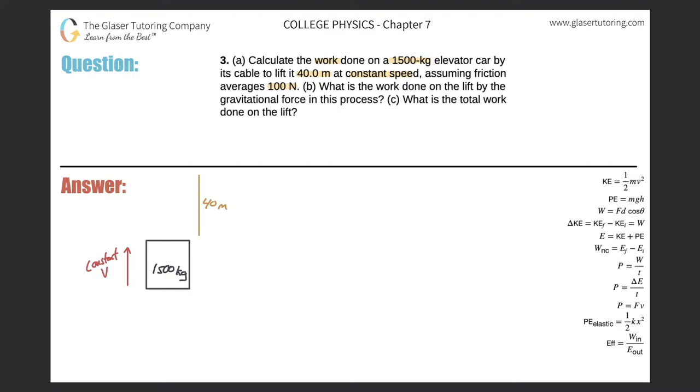So first, in order to calculate the work done on the 1500 kilogram elevator, you need to consider formulas that involve work. So one of the formulas are right over here on the right hand side. We know that the work is equal to the force applied, multiplied by the distance the object traveled, and multiplied by the cosine of the angle between the force vector and the distance vector.